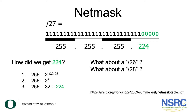So what would be the net mask for a /26 and a /28? For a /26, it would be 256 minus 2 to the power of 32 minus 26, which is 256 minus 2 to the power of 6, which is 256 minus 64, giving you 192. For a /28, it would be 256 minus 2 to the power of 32 minus 28, which is 256 minus 2 to the power of 4, which is 256 minus 16, giving you 240. So the net mask for a /28 is 255.255.255.240 and for a /26 is 255.255.255.192.